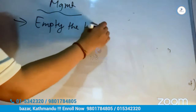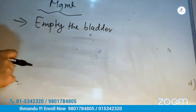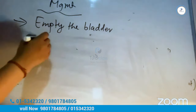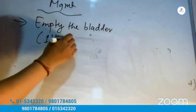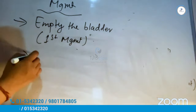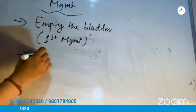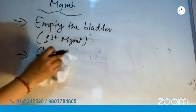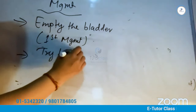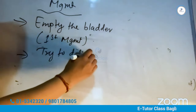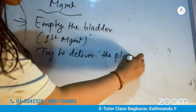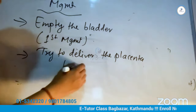The first management step: empty the bladder. What do you do with the bladder? Empty the bladder. This is the first management step.